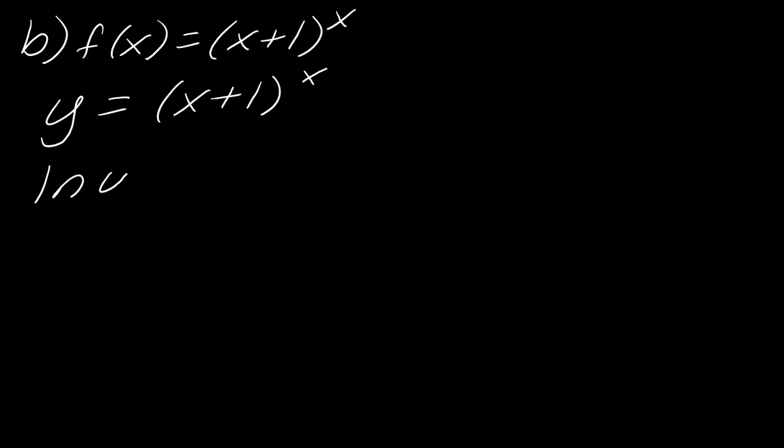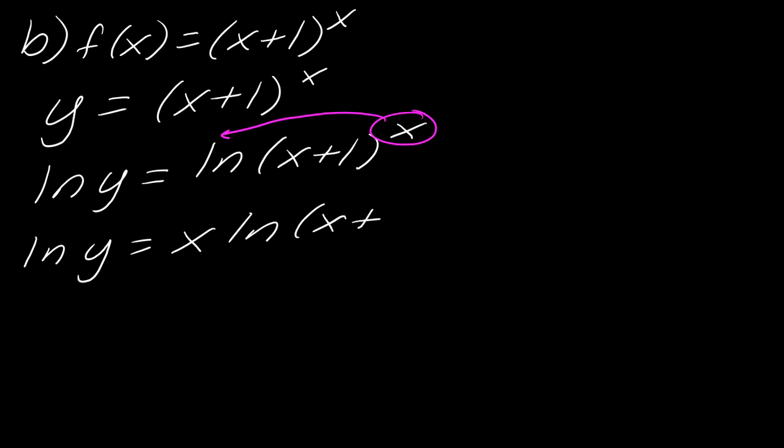And now to do this, so we do the same thing. So we take the natural log of each side and natural log, natural log of x plus 1 to the x. And now in this case, when I'm actually using my logarithmic properties, I'm just going to bring this out in front. So there's not a whole lot of simplification I can do in this case. Okay, so there we go.